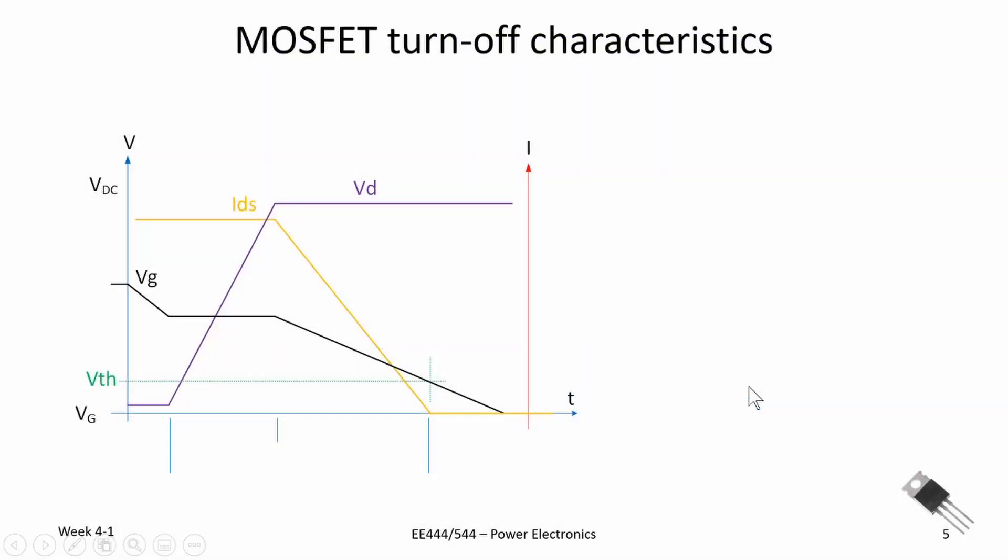In a similar way, we can look at the turn-off characteristics or the turn-off time for the MOSFET. Now, I'll label this time T4, T5, and T6. The total turn-off time is equal to T5 plus T6. T4 is the time it takes for the gate voltage to start to fall, and the drain-to-source voltage will start to rise once it hits the Miller plateau.